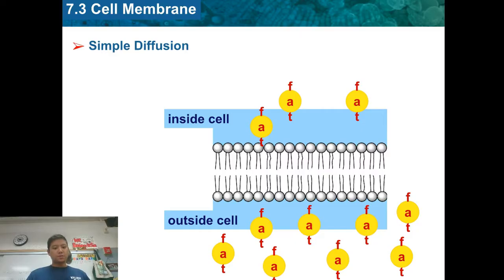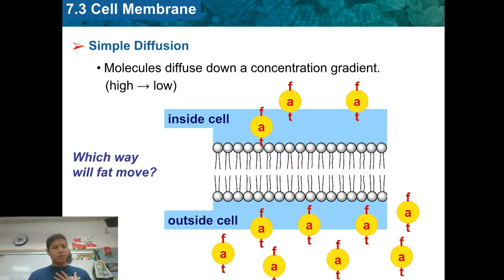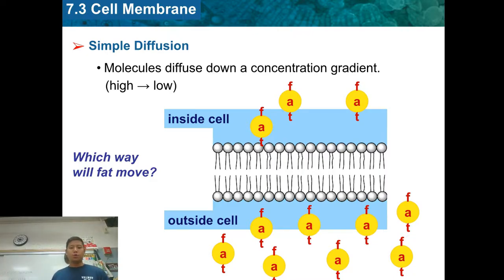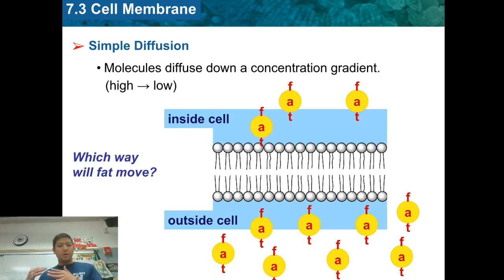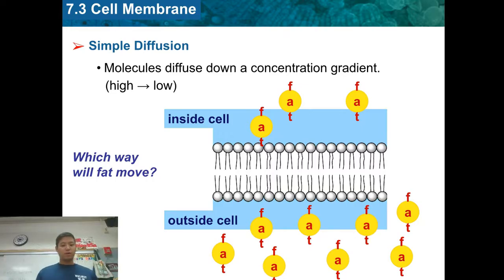The first type of passive transport is called simple diffusion. It moves from a high concentration to a low concentration naturally — it doesn't require any energy. For example, if I spray perfume in a corner of the room, there's a high concentration of perfume in that corner and a low concentration everywhere else. Given time, the perfume slowly diffuses from high to low until there's an even concentration everywhere in the room.